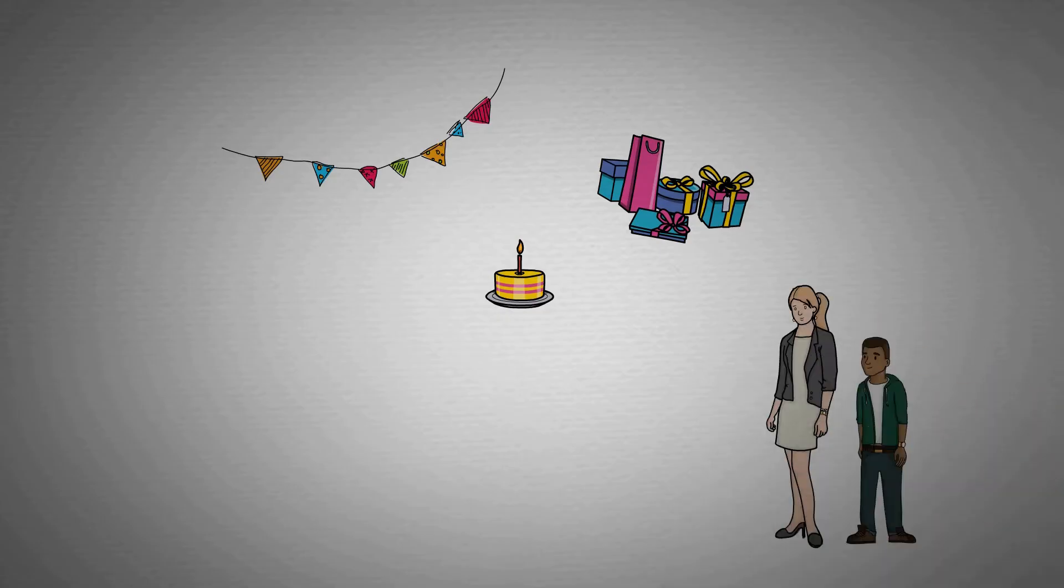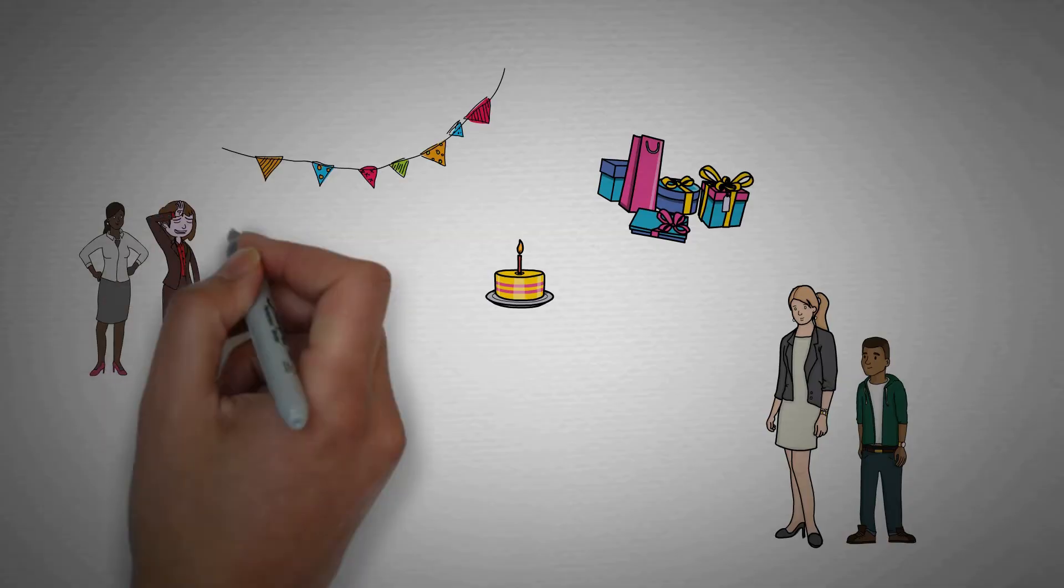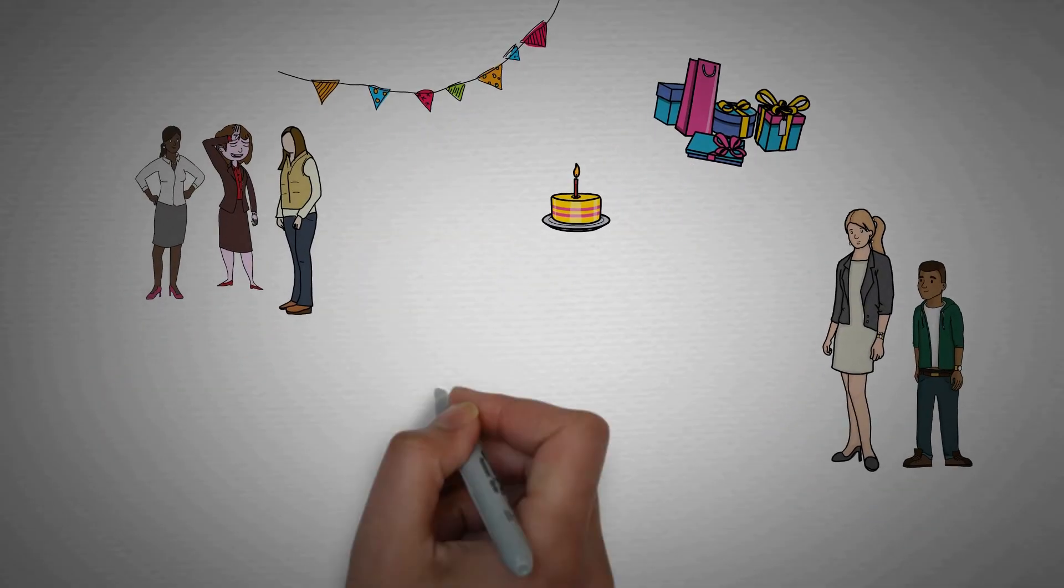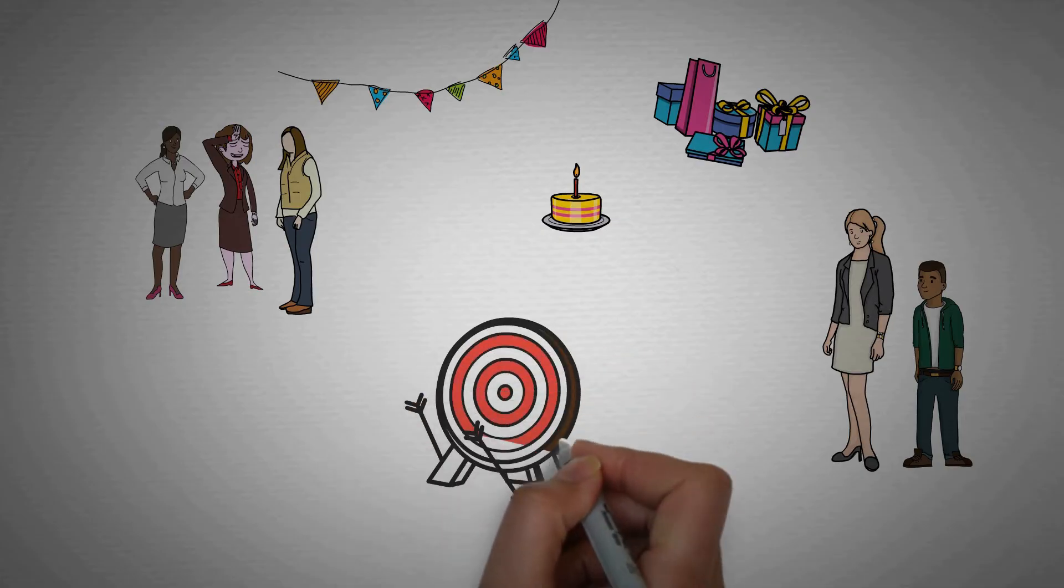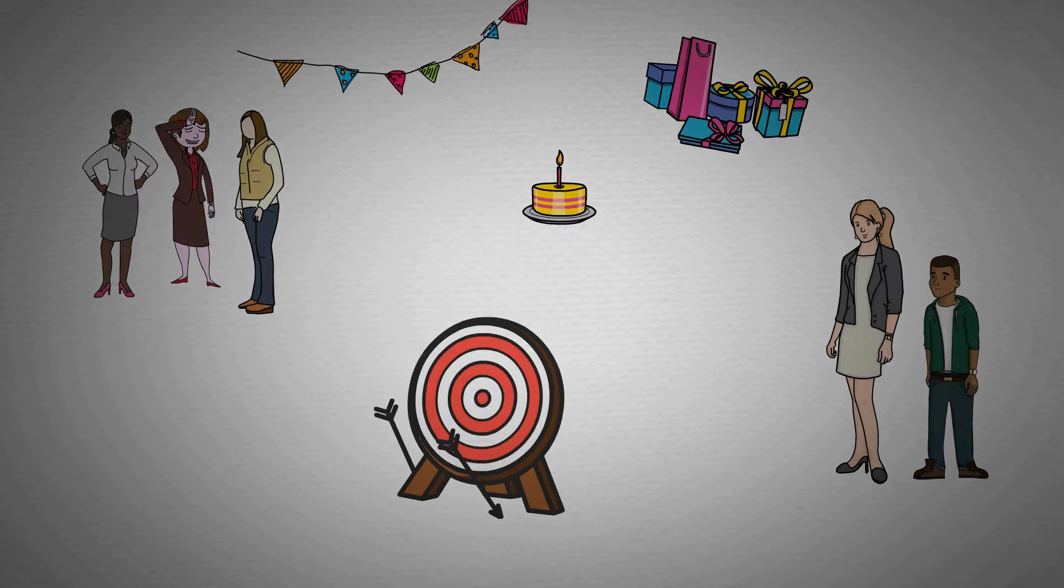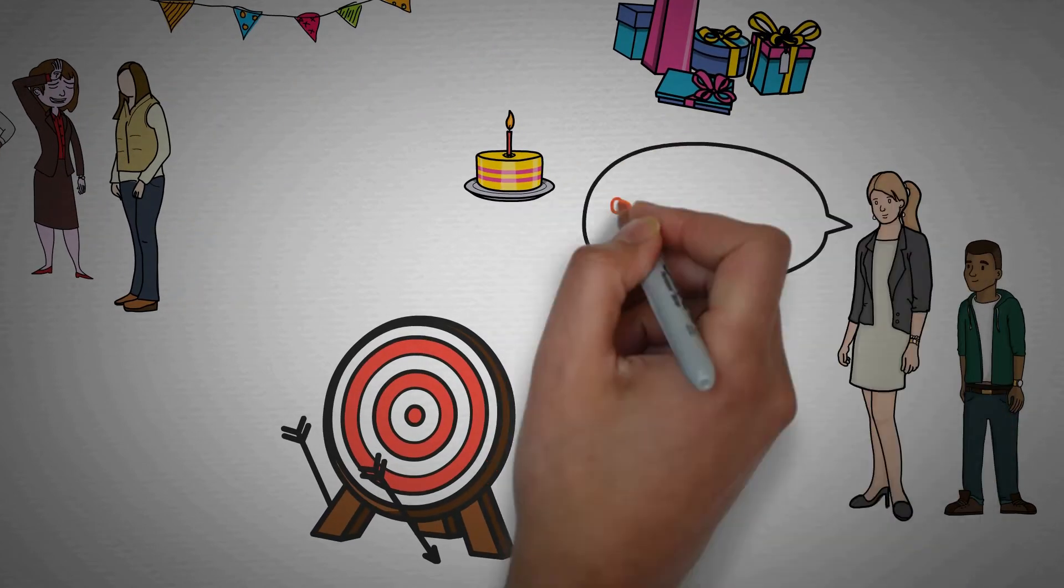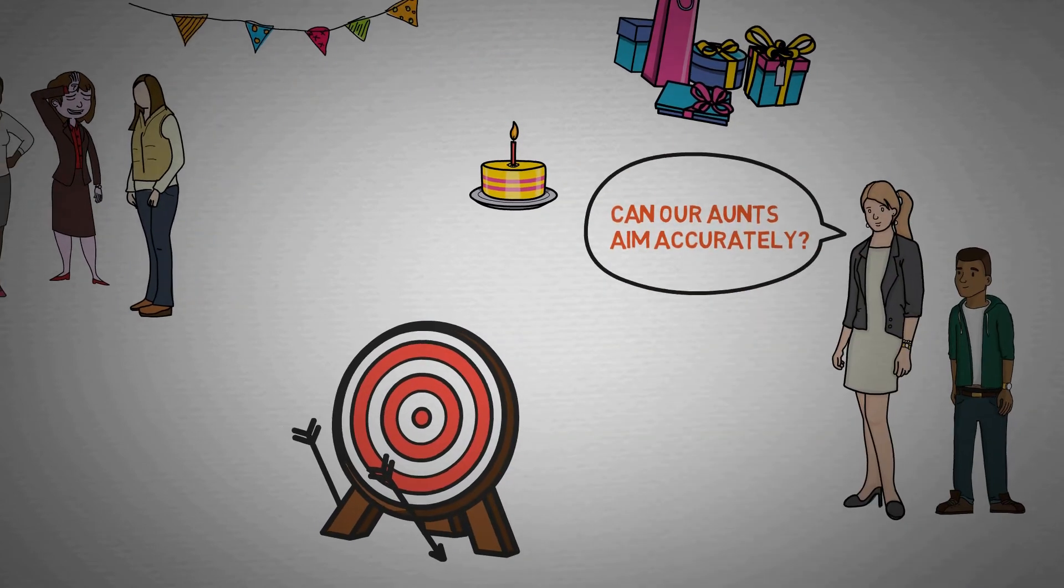So you are at a party with your family and you are sitting with your brother. Suddenly you see some of your aunts join the party and they are very interested in throwing darts at the dartboard. But not even a single dart thrown by your aunts hits the board. So you laugh and say to your brother, 'Can your aunts aim accurately?'